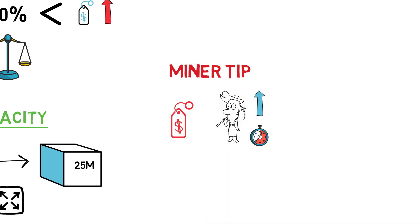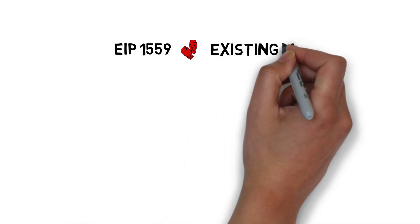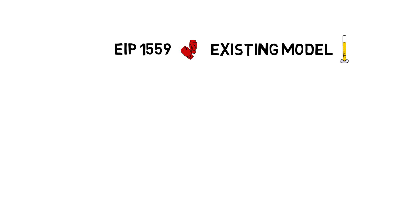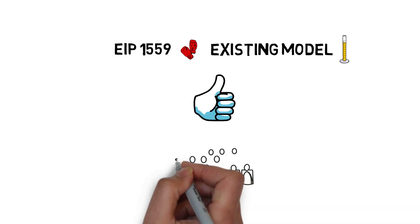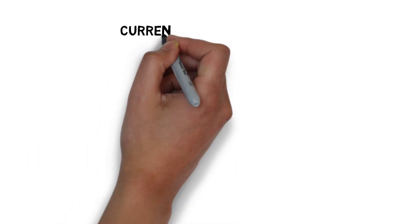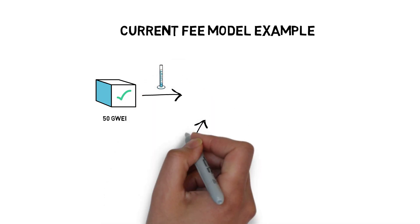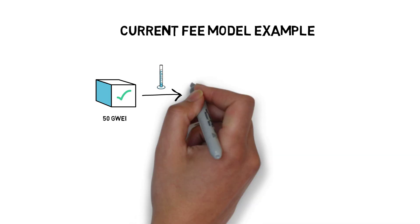Let's go through a quick example to see how the EIP-1559 fee model compares to the existing model during a period of high network activity. Starting with the current fee model: imagine the minimum gas fee to be included in the previous block was 50 gwei. The network activity seems to remain the same, so users start submitting their transactions with 50 gwei, trying to be included in the next block.